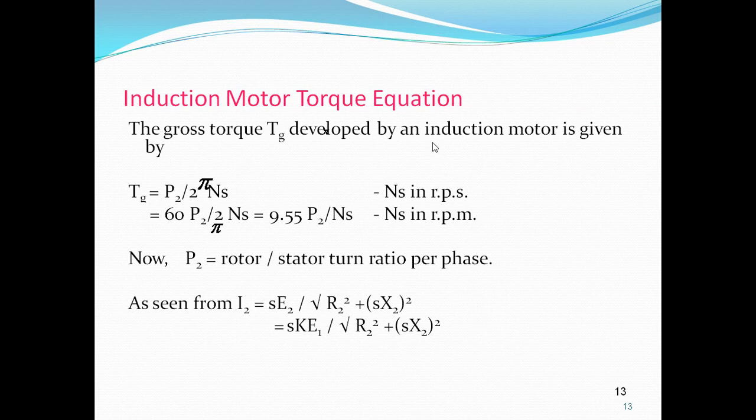From the torque-slip curve we can draw the figure by taking the torque equation, assuming certain values of R2, X2, and K, and varying slip from 0 to 1 (i.e., 0, 0.1, 0.2, 0.3 … up to 1). Calculate the torque value, plot torque on the y-axis and speed on the x-axis to get the torque-slip characteristics.